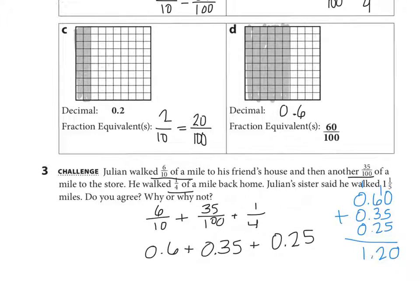So we have one and twenty hundredths. And so you can think, is one and twenty hundredths the same as one and one-fifth? Why, yes, it is. Because I can know that one-fifth is how many tenths? Two-tenths. And isn't this also two-tenths? Yes, it is. So do you agree? Did he really walk one and one-fifth miles? Yes, I agree. And you're going to explain why you agree.